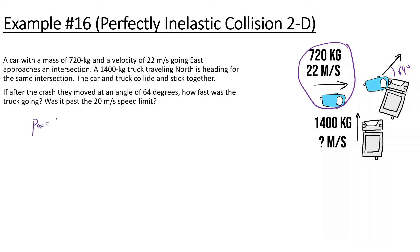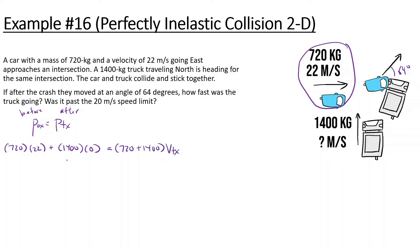Let's look at momentum in the X direction before and after the collision. Before: mass of the first car is 720, going 22 meters per second in the X. The truck, 1400 kilograms, is only going straight up, so its X velocity is zero. After they hit, they stick together: 720 plus 1400 times V final X. That gives us 720 times 22 divided by 2120, which is 7.47 meters per second in the X direction.